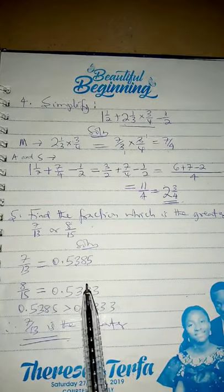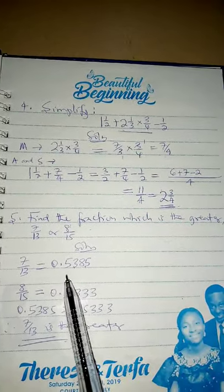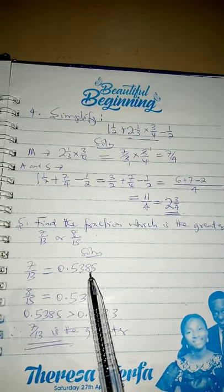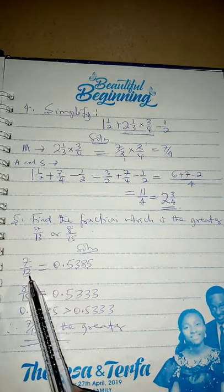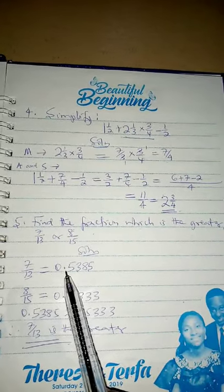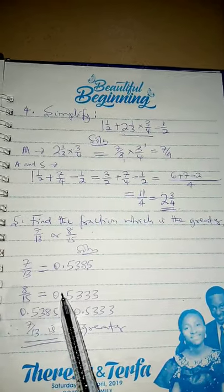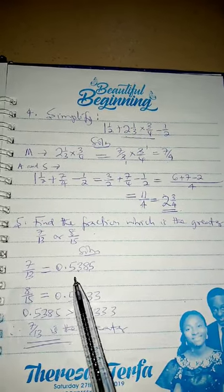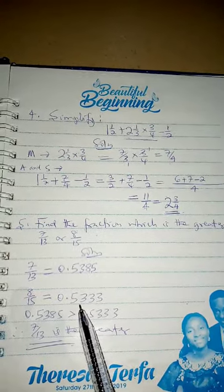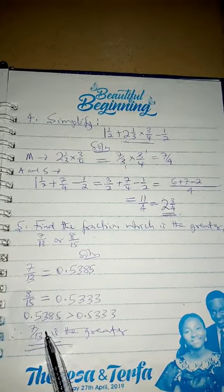Now find which fraction is greater between the two given fractions. The simple thing to do is to express each as a decimal fraction. Seven over 13, expressed to four decimal places using a calculator, gives 0.5385. Similarly, 8 over 15 is 0.5333. With that you discover that 7 over 13 is greater than 8 over 15. So 7 over 13 is the greater fraction.